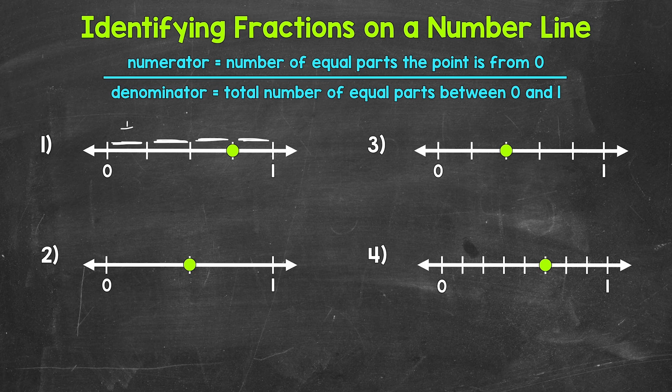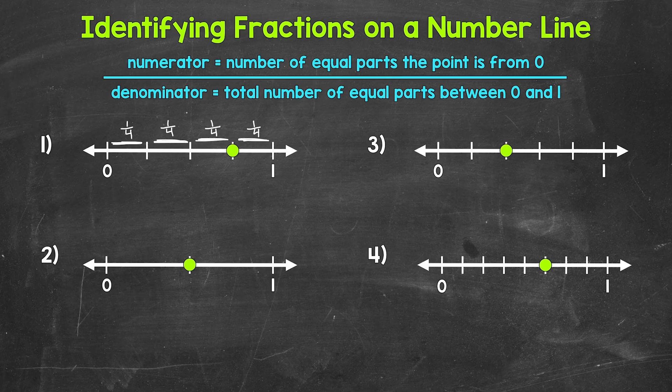This is one fourth of the distance between zero and one. This is one fourth, this is one fourth, and this is one fourth. Each equal part is one fourth of the whole. So our denominator is going to be the total number of equal parts between zero and one.